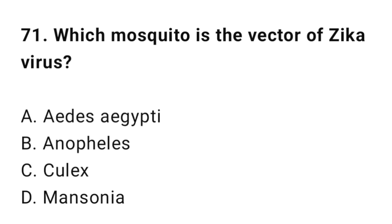Question number seventy-one: Which mosquito is the vector of Zika virus? The correct option is A: Aedes aegypti.